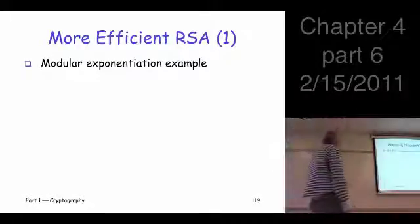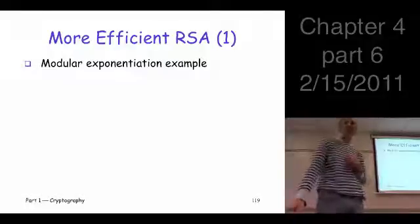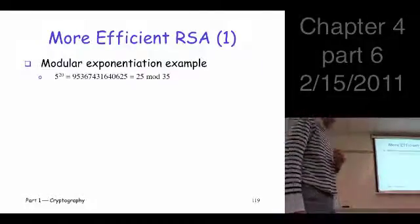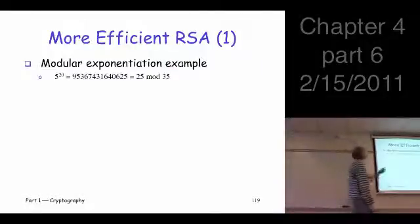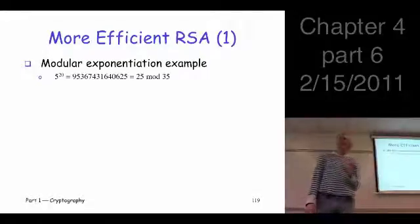We're going to have something that's hopelessly inefficient or even impossible to do. So let's look at just a simple example of modular exponentiation. Suppose we want to take 5 to the 20th power mod 35.